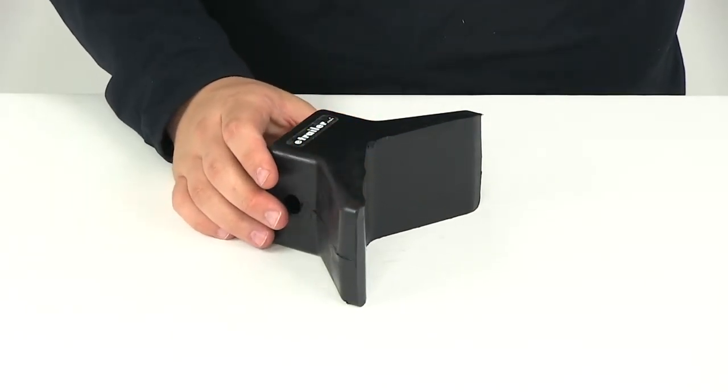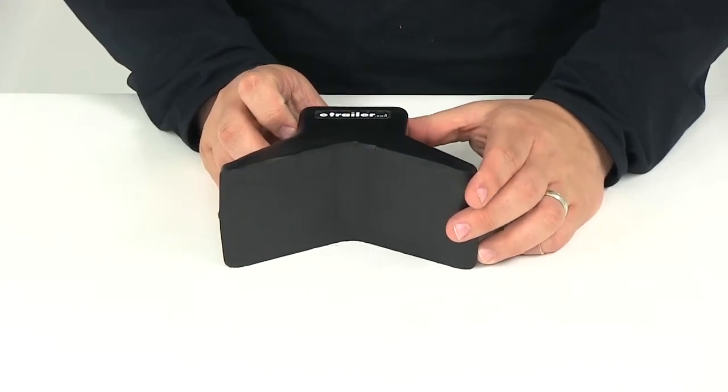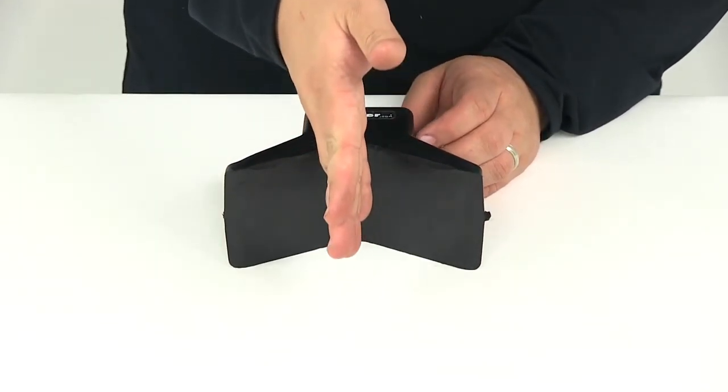This is made from solid high-grade rubber, so it will protect the bow of your boat as you mount it and bring your boat onto your trailer.